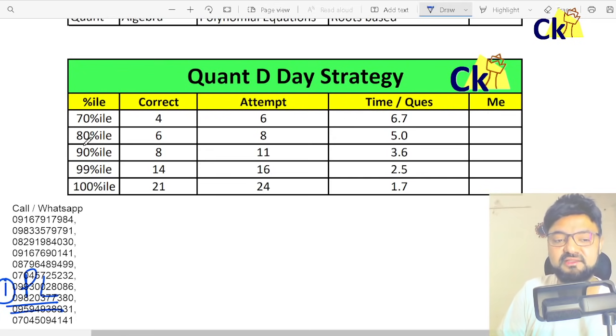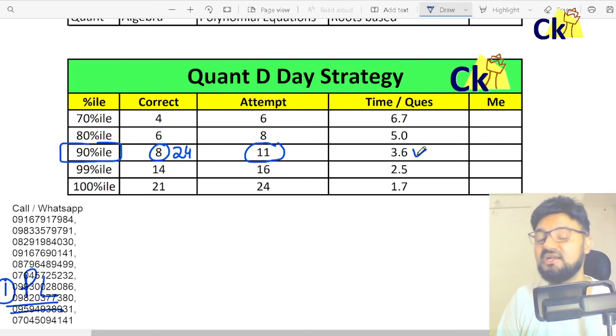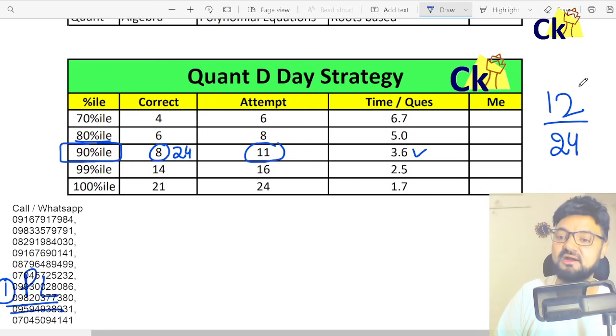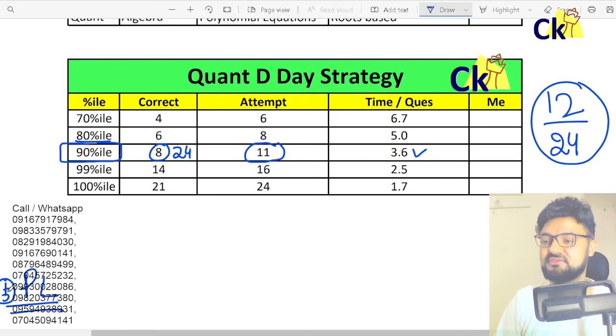See, if you want to clear the cutoff, 90 percentile is your target. You just need to do 8 questions correct, which is 24 marks. For that, you have to attempt around 11 questions. 3.6 minutes per question is your ideal time for the CAT paper. So I don't need to solve the complete paper. Out of 20, I just need to attempt half - 12 questions. Then based on accuracy, it will be my final score.